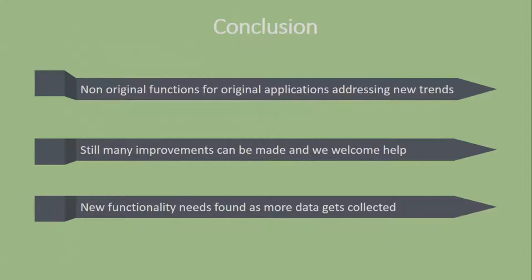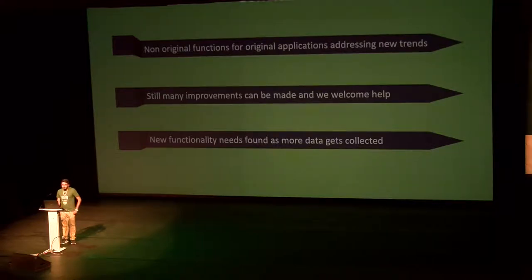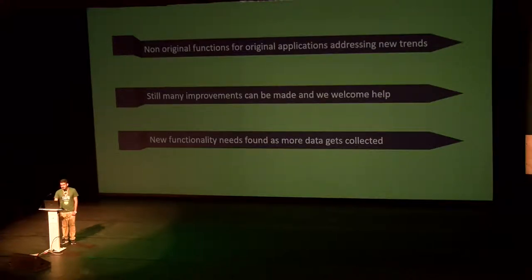In conclusion, we have used non-original functions for original applications, trying to address new trends. Our focus has been on high-resolution DEMs coming from UAVs, and the error possibility maps we create are based on data from LiDARs or UAVs. We know many improvements can still be made. The code is available on GitHub — we welcome all contributions and feedback. Please try it out and let us know how we can improve. New functionality needs have been found as more and more data is collected, and this specific use case is driven by the increase of data being created by drones everywhere.